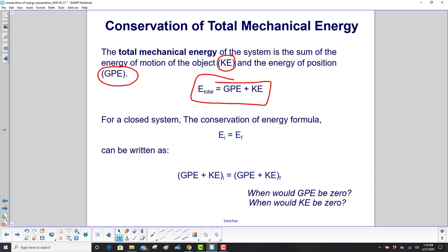For a closed system, we have the conservation of energy formula. Initial energy is final energy, and we're going to rewrite that. We're going to take this GPE and KE, put it down there, and see this little subscript here? That's initial, and this here is final.